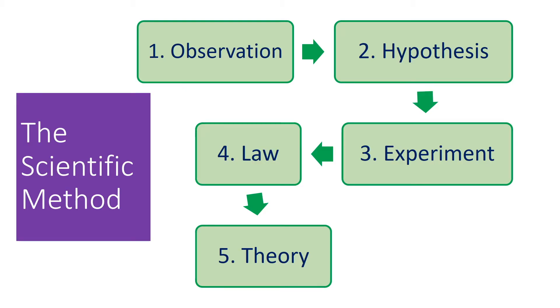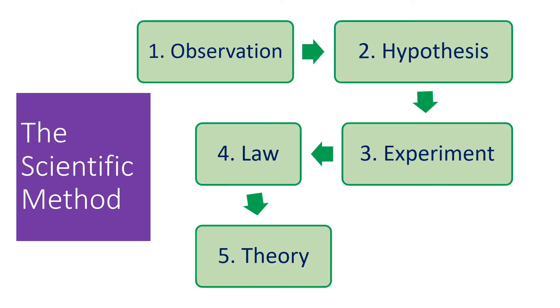The final stage of the scientific method is the theory. The theory links to the top core concepts because the theory embodies the explanation element, and this is also a requirement for knowledge. The hypothesis is the guess as to what is going on in the world. The theory explains it, and it is itself supported by the evidence gained from the experimental stage.